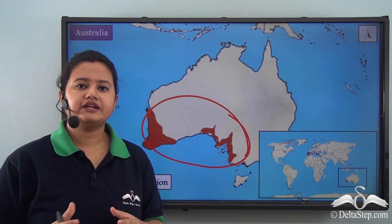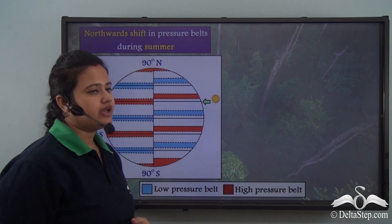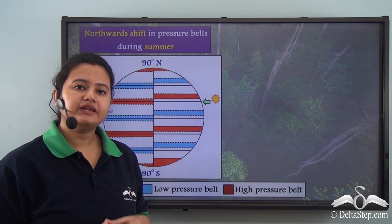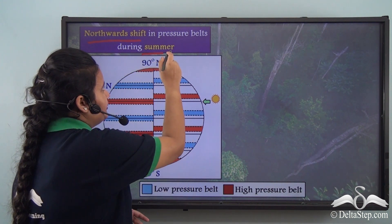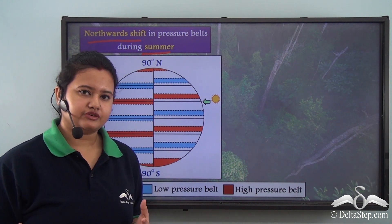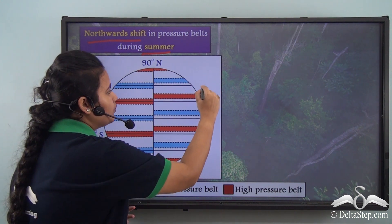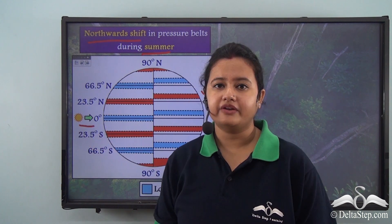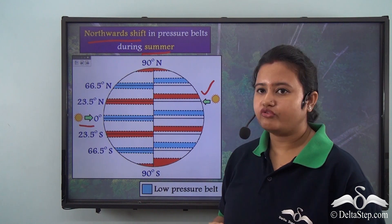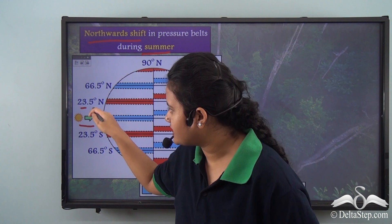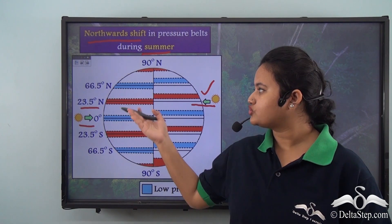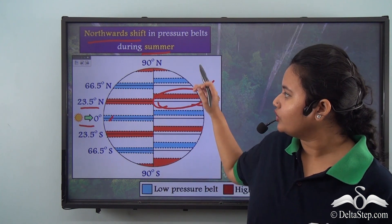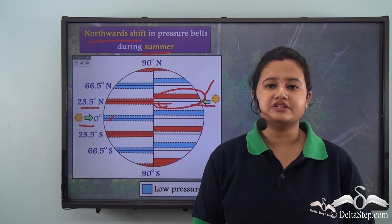Let us now discuss about the climatic conditions of this biome. Shifting of pressure belts is most prominent in the Mediterranean regions. By shifting of pressure belts, I mean that there is a northwards shift during summer and southwards shift during winter. These pressure belts shift due to change in the vertical position of the sun. During equinoxes, the sun is overhead the equator. Whereas during summer solstice, the sun's position shifts and is overhead the Tropic of Cancer, that is 23.5 degrees North latitude. Since the sun is overhead the Tropic of Cancer, this region gets intensely heated, resulting in a northwards shift in pressure belts, and this region experiences warmer summer.